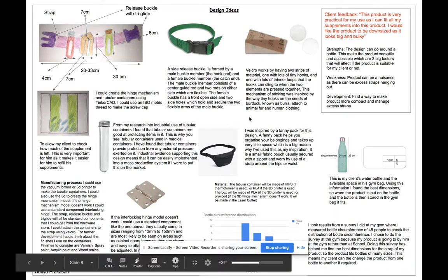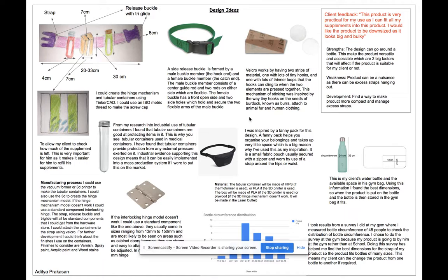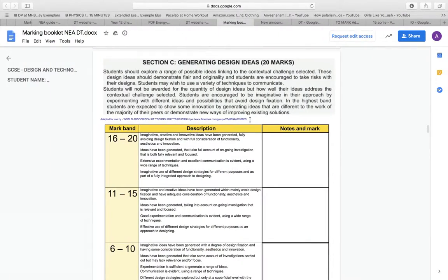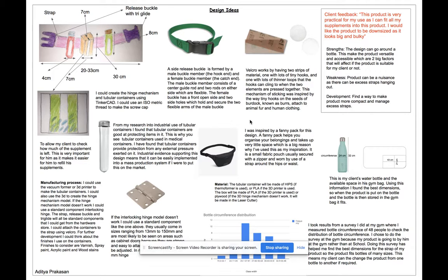Hi, my name is Aditya. So this is Section C of the DTNEA. In this section, it's when you start producing your ideas — potential ideas — and it's worth 20 marks. It should take you quite a while to produce this part of the NEA.